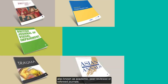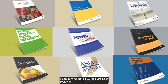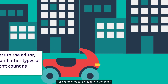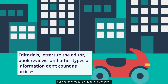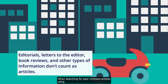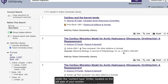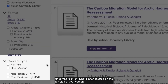Keep in mind that not all journals are peer-reviewed, and not all information in a peer-reviewed journal is actually refereed or reviewed. For example, editorials, letters to the editor, book reviews, and other types of information don't count as articles and may not be accepted by your professor. When searching for a peer-reviewed article using YukonU's Discovery search box, select 'Peer-reviewed' under the Content Type limiter located on the left side of your screen.